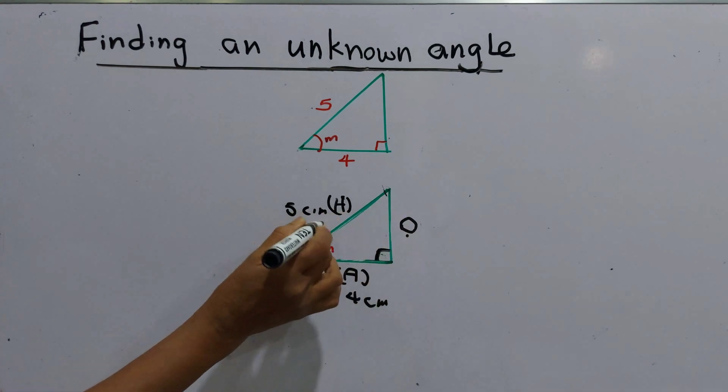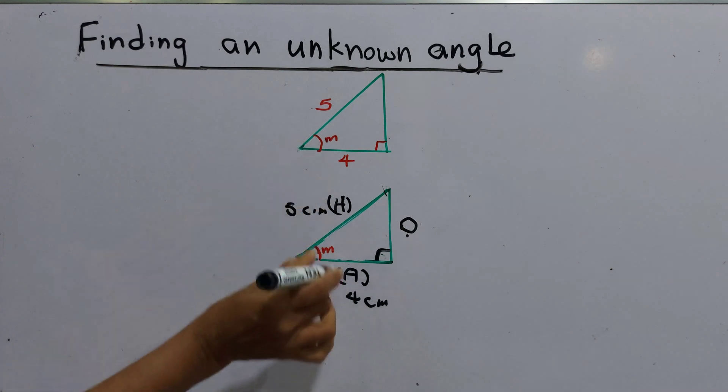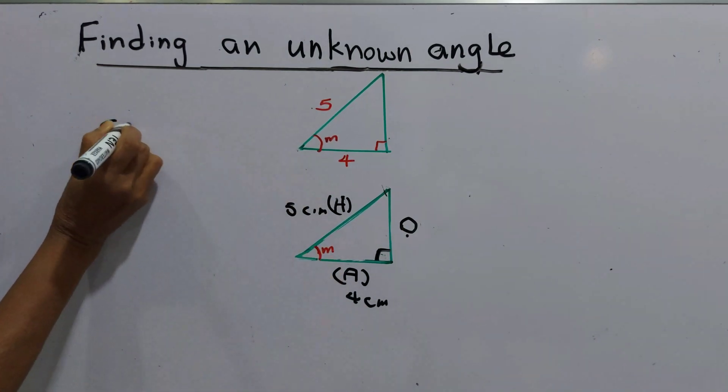Then we have to get the connection of A and H. You already learned this. What is the connection of A and H? That is cosine.